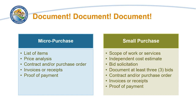Documenting decisions at each stage of procurement is incredibly important to demonstrate compliance with the requirements. For micropurchases, documentation should include a list of items, price analysis, contract and/or purchase order, and invoices or receipts and proof of payment. For small purchases, documentation should include scope of work or services, independent cost estimate, bid solicitation, documentation of at least three bids, contract and/or purchase order, and invoices or receipts and proof of payment.